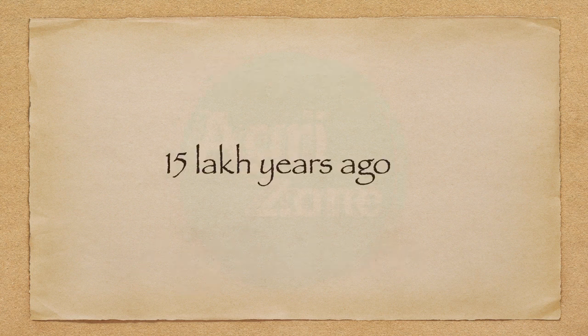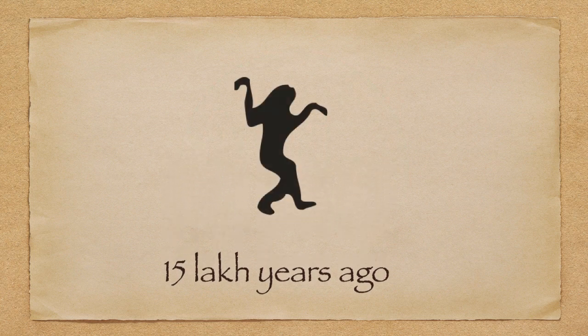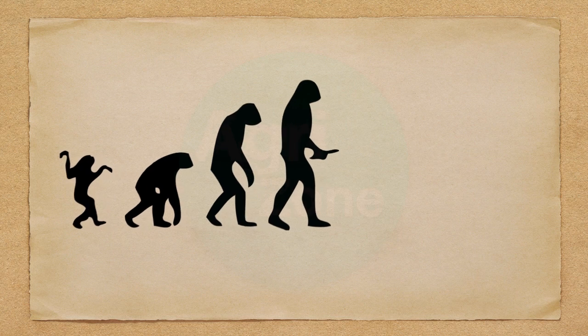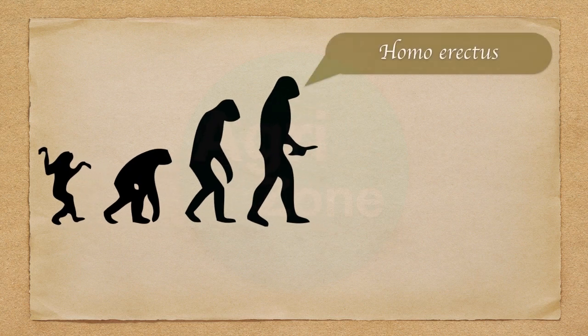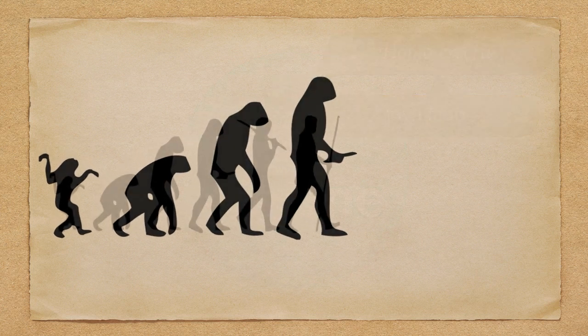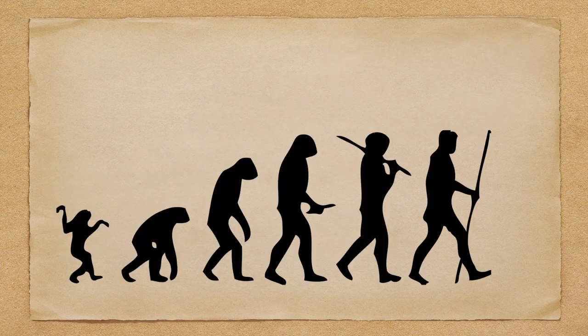15 lakh years ago, a man evolved from a monkey who started to move by standing erect on his feet. Such a man is called Homo Erectus or Java Man. Later on, Homo Erectus was transformed into Homo Sapiens.